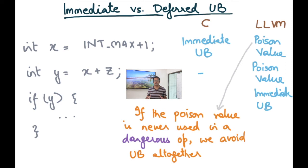If the poison value is not used in a dangerous operation, then we'd never trigger UB. And this allows many common transformations, especially the ones that involve hoisting. And loop invariant code motion is a very prototypical example of a transformation that uses hoisting.